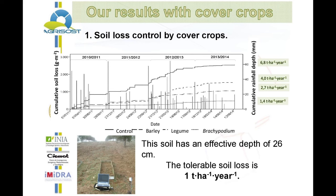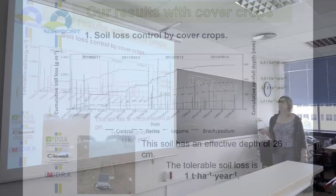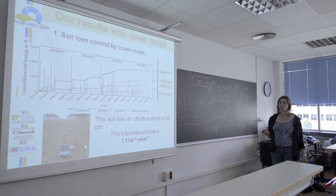In the last year, the mean for Brachypodium was less than 1 ton per hectare per year. So it's a good system to control soil erosion.